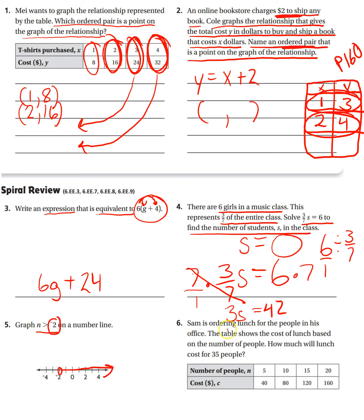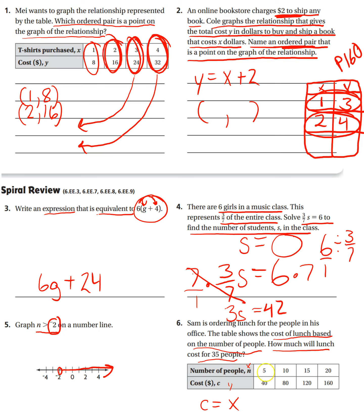Number six. Sam is ordering lunch for people in his office. The table shows the cost of lunch based on the number of people ordering. How much will lunch cost for 35 people? So, you can just follow the pattern. You could find the equation. I'm going to find the equation. I can think of this as my X and this as my Y. So the cost is going to equal, what are they doing to X each time? So I can multiply 8 times 5, and that will give me 40. 8 times 10 will give me 80. So, yeah, it looks like they're multiplying by 8. So now I just need to take 35 times 8. Do that math, 35 times 8, and that will give you your cost.